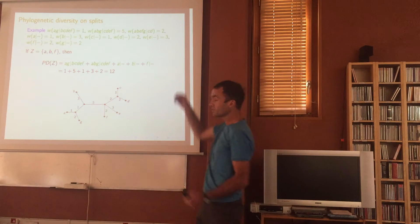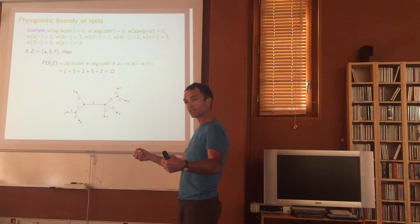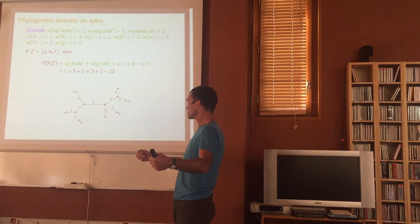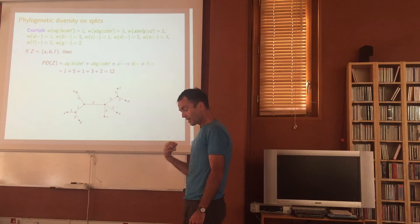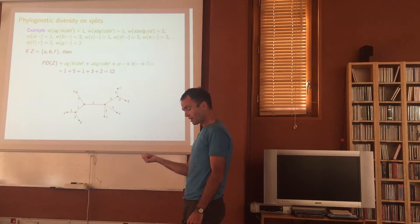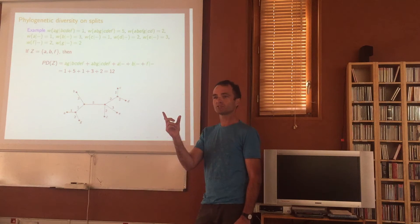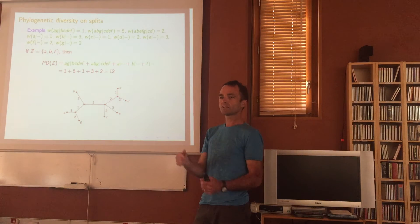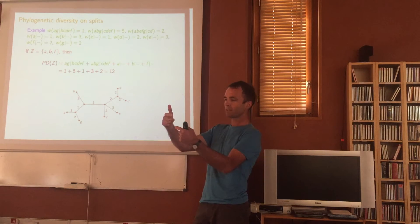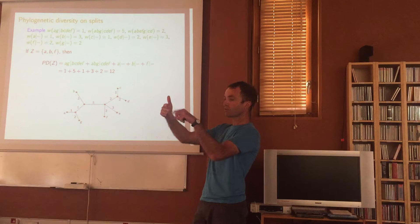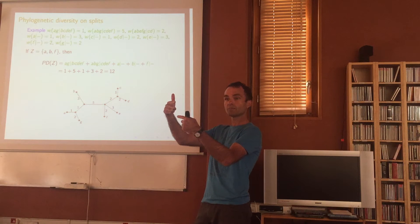If I give you an arbitrary collection — forgetting about the weighting — that collection will arise from a tree if and only if every pair of splits satisfies the condition that one of the four crossing intersections has to be empty.